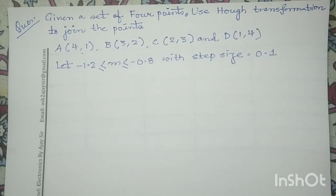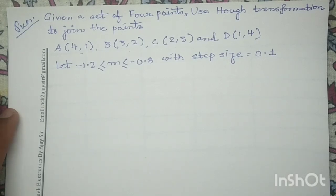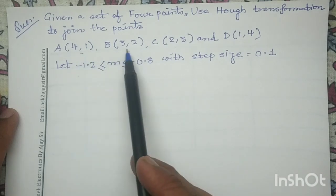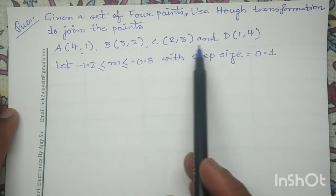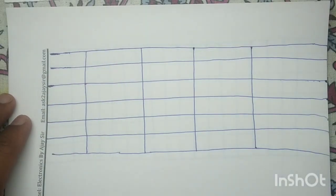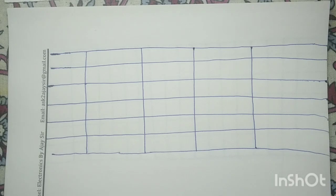Good morning all. Today we will discuss Hough transformation. In this question, four points are given to us: four comma one, three comma two, two comma three, and one comma four. We have to use the Hough transformation to join these points. In this type of question, we will use the standard Hough transformation equation.